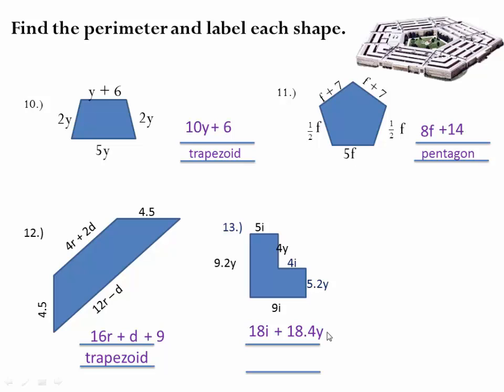i and y are different variables. They are unlike. Therefore we can't combine them. The shape has six sides. A six sided figure is called a hexagon. Six has an x. Hex has an x. Easy way to remember it.